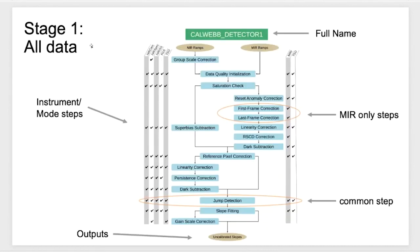Let's look at stage one in a bit of detail. All the exposures go through this. You don't need to absorb this diagram in detail — you can look at the presentation online. The basic point is it goes through what you would think of as detector-level calibration. The vertical columns here show all the different modes for different instruments: NIRCAM data goes through everything, NIRISS, FGS, TSO (time series observing), and MIRI TSO on the right-hand side. There are a couple of differences in MIRI compared to the near-IR instruments, just based on detector physics.